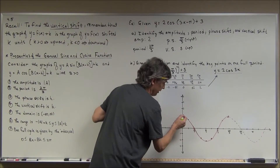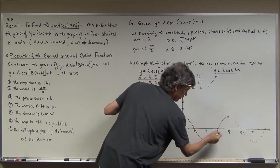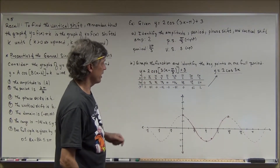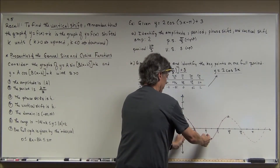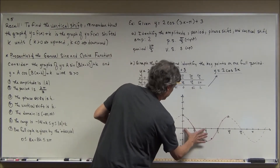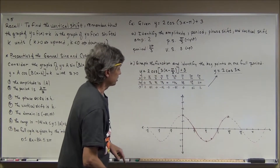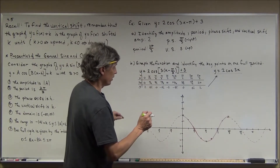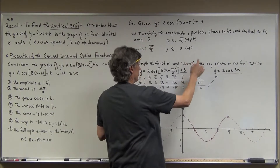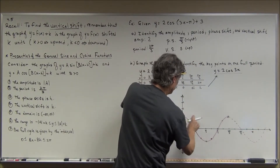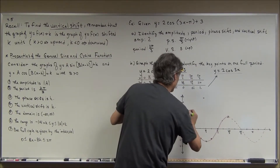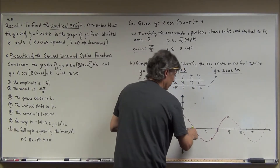I'm going to take my key points — the highs, lows, and x-intercepts — and shift them to the right by π/3. That distance is about from my thumb to my pointer finger. Starting with the first point (0, 2): I move it π/3 to the right and then up 3 units, putting it at approximately (π/3, 5). That's where this first key point goes.